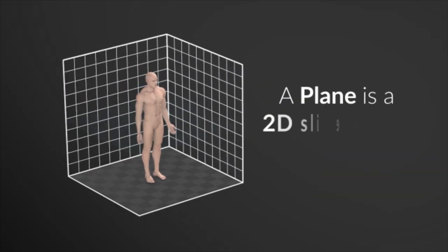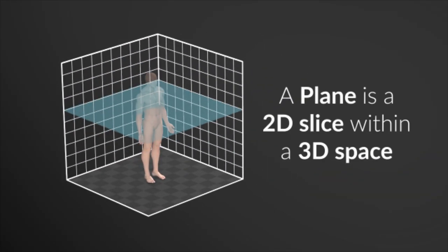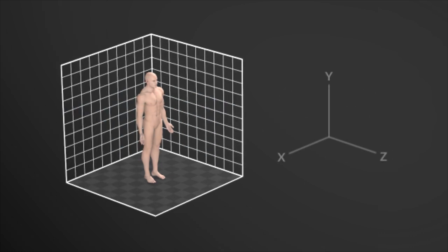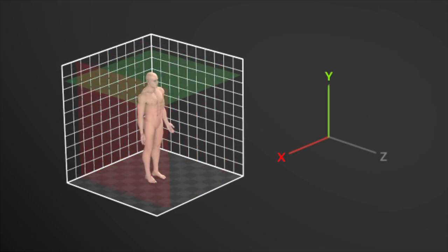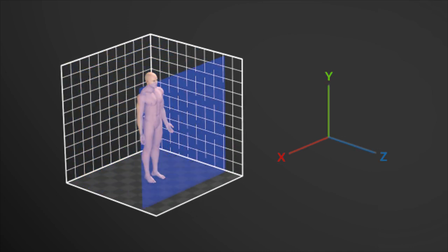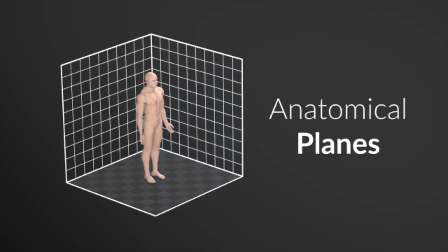A plane can be described as a 2D slice in a 3D space. Imagine a sheet of glass slicing across an upright human body in X, Y, and Z axis. This is what we refer to as anatomical planes.